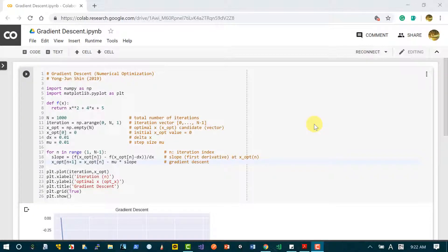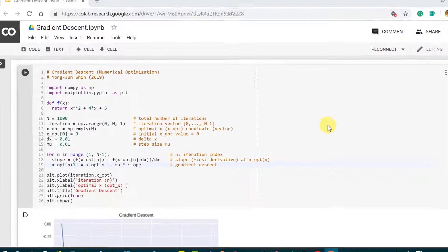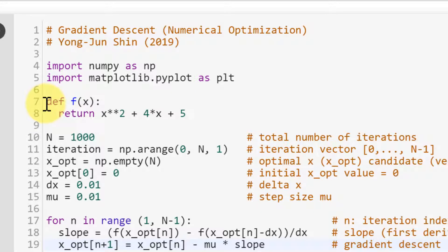Now I'm going to demonstrate the gradient descent method using Python. First, I define this Python function.